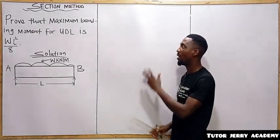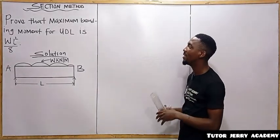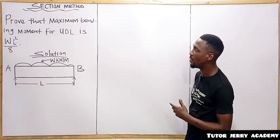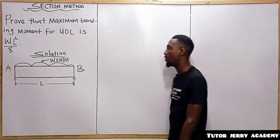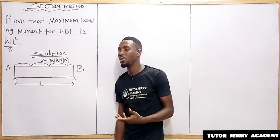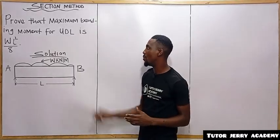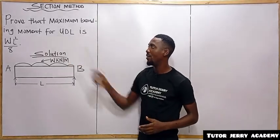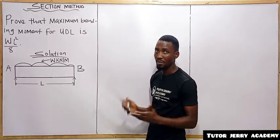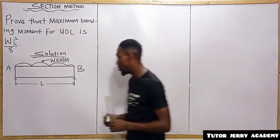We are going to be solving another question: we should prove that the maximum bending moment for a UDL is WL squared over 8. So for a UDL on a simply supported beam, we want to derive that the maximum bending moment is WL squared over 8.